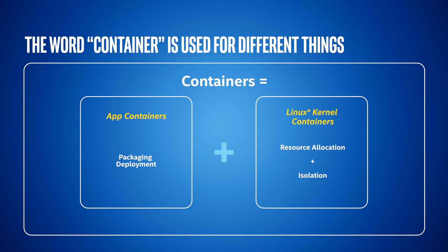I'm going to start with the word 'container.' The word container is used for really two separate parts. There's the backend technology of containers — Linux kernel containers have been around for a really long time. They're about resource allocation and isolation. The other side is the packaging and deployment of containers, which is what's really new in the industry today, which companies like Docker and Rocket have made container technology really easy to use.